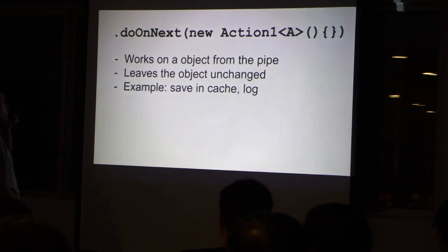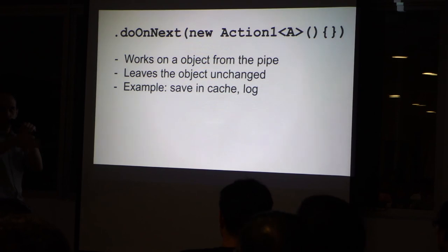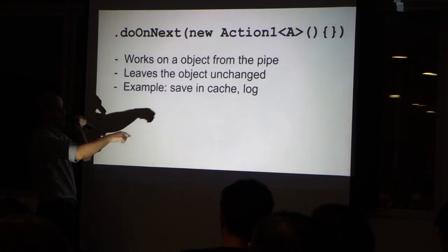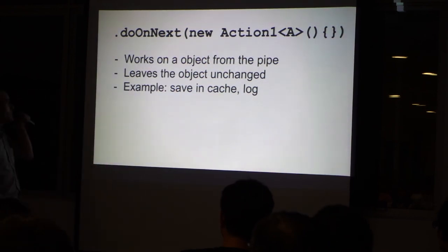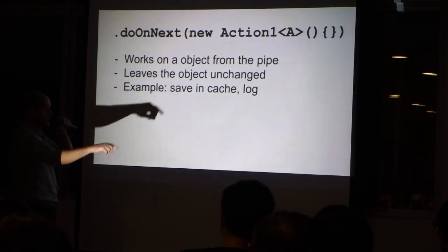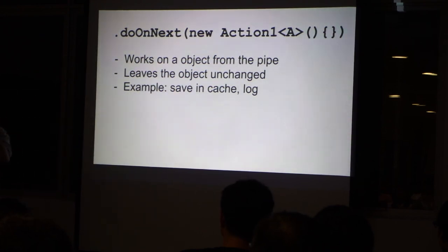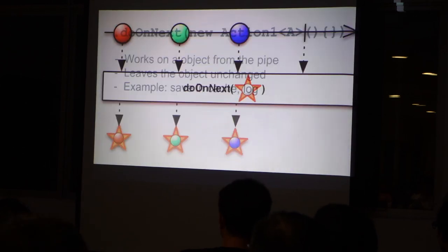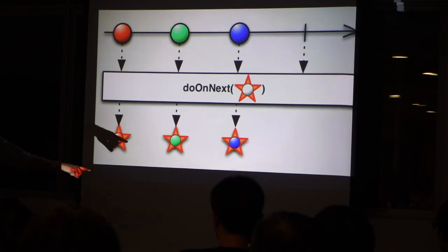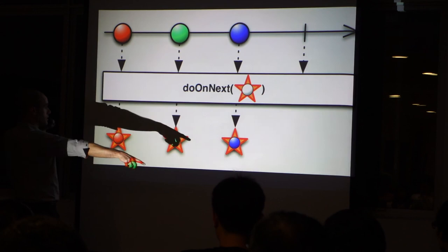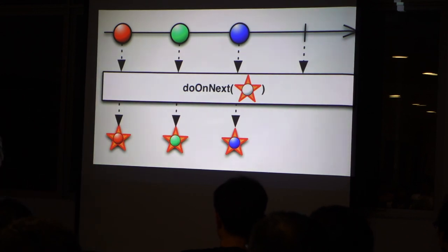So similarly to map, but without changing the observable, without changing the elements, we can decide to do something. Here we see Action because we don't transform, we just use. If you want to save in the cache, you don't want to hold the elements. So that's another diagram. Here we see at the bottom there is no observable, it just has some stuff on the object.